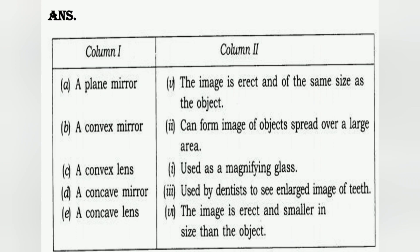D. A concave mirror used by a dentist to see enlarged image of teeth. Joh concave mirror hota hai, woh objects ki enlarged image show karta hai, usse dentist use karti hai. E. A concave lens — the image is erect and smaller in size than the object. Joh concave lens hota hai, woh image seedhi show karta hai, lekin jo image hoti hai, woh size mein chhoti hoti hai than the object.